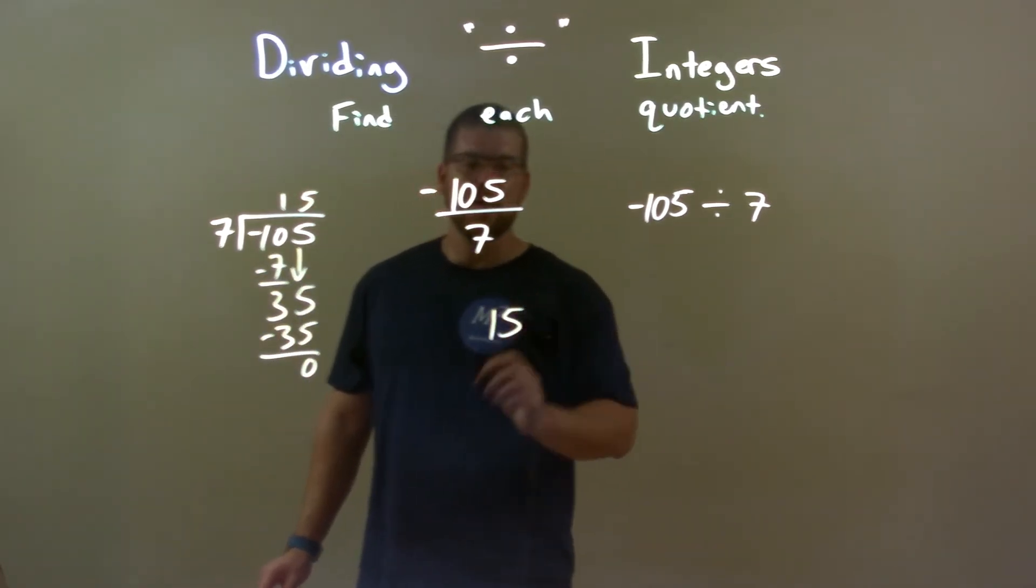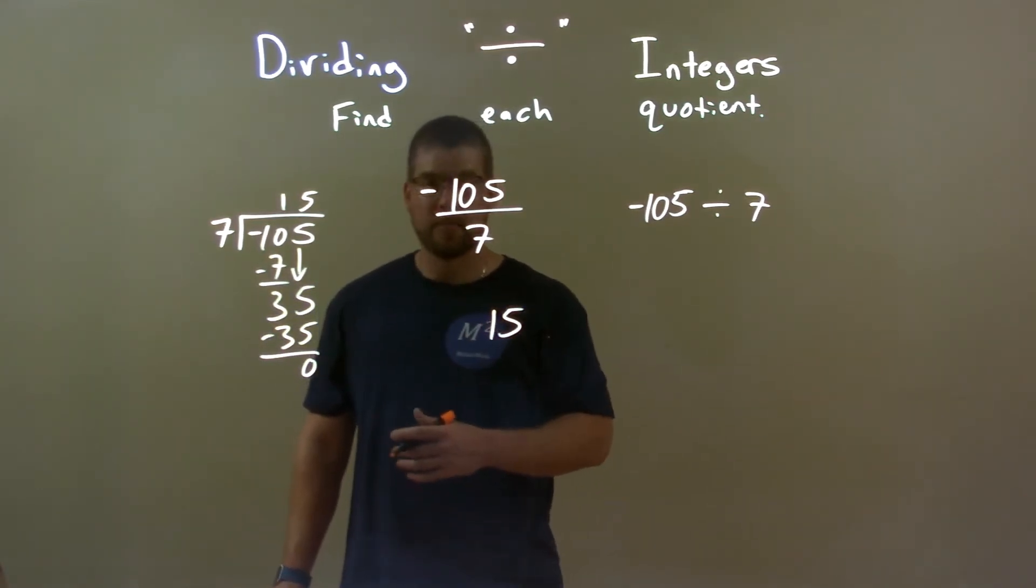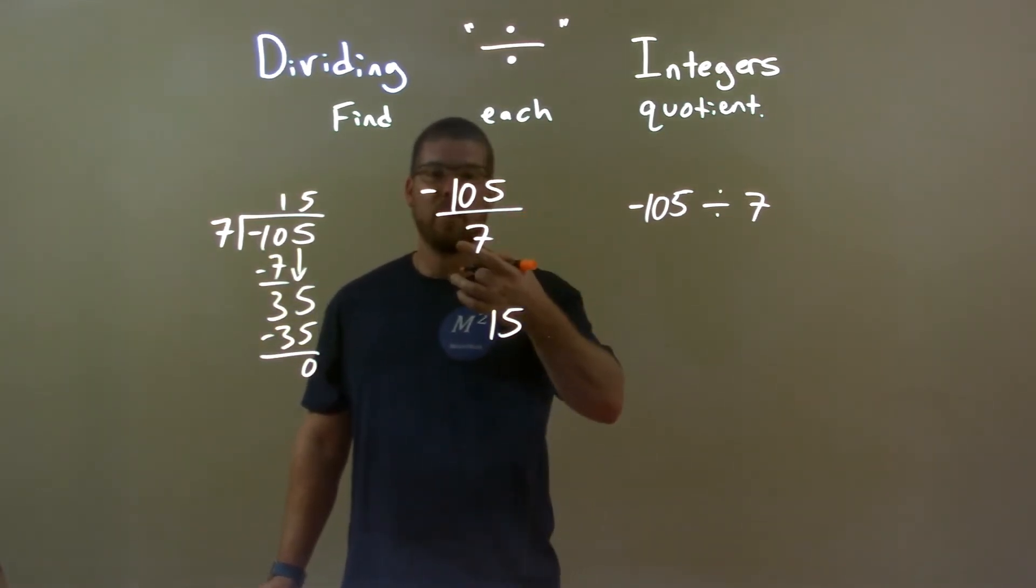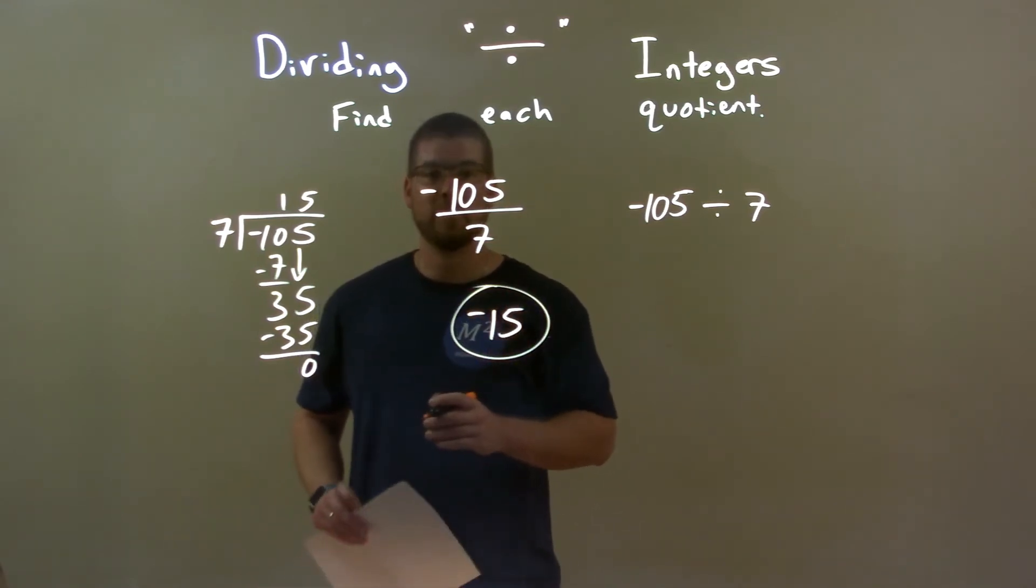So, 15 is so far the numerical answer, but we need to know if it's positive or negative. Well, a negative divided by a positive is always going to be a negative. So, final answer here, negative 15.